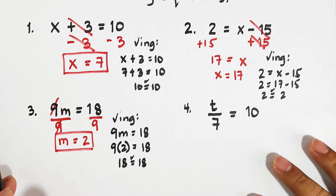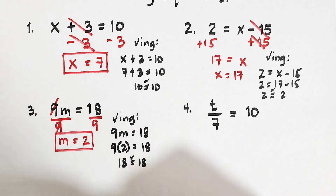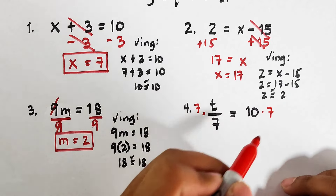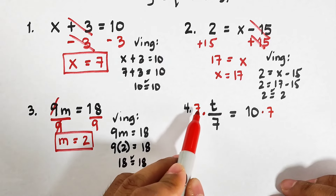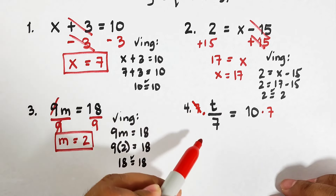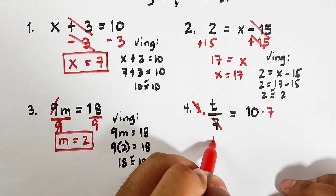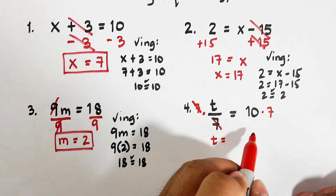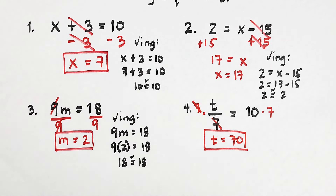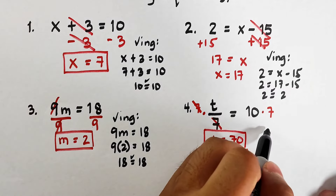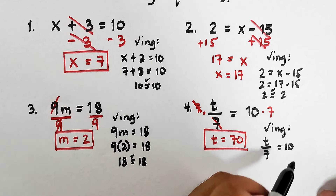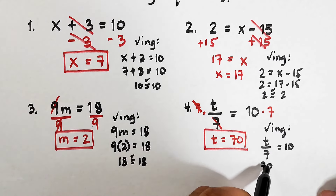Now let's move on with the last example. We have t over 7 is equal to 10. To eliminate the division, we need to undo it using the inverse operation. Since t over 7 implies division, we need to use multiplication. We will multiply the whole equation by 7 on both sides. This gives us 7 times t divided by 7, and we can cancel the 7s out, leaving just t on the left side.